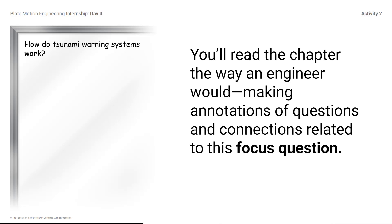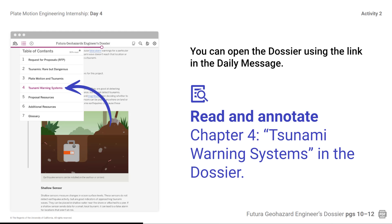You'll read the chapter the way an engineer would, making annotations of questions and connections related to the focus question. You can open the dossier using the link in the daily message. Read and annotate Chapter 4: Tsunami Warning Systems in the dossier. Use the table of contents to navigate to Chapter 4, actively read and annotate this section, and stop when you get to the subheading Sensor Types.